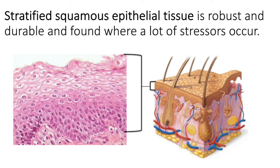Stratified squamous epithelial tissue, on the other hand, is very sturdy and durable. It's many layers of those flat, scale-shaped cells, and it provides incredible protection against stressors. Possible stressors are mechanical stressors, as well as pathogenic stressors such as bacteria and viruses.